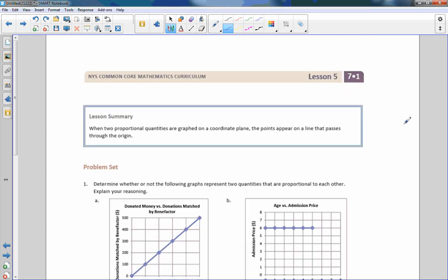That is the end of lesson five. Go to your problem set. But before that, remember that when two proportional quantities are graphed on a coordinate plane, the points appear on a line that passes through the origin.